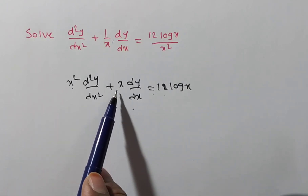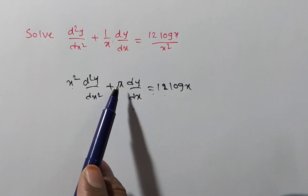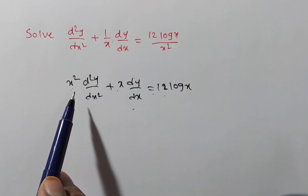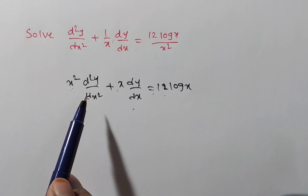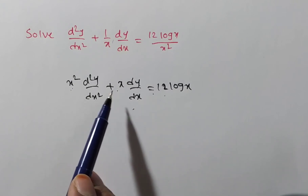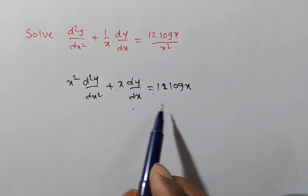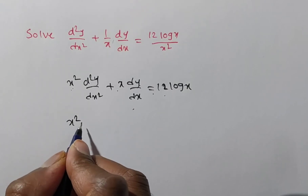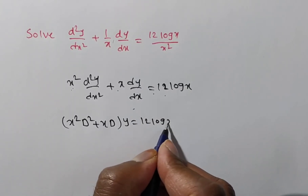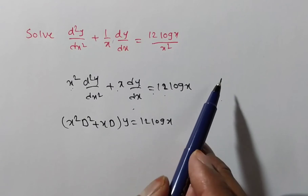Observe this problem. The coefficient of x has dy/dx, where the order of the derivative is 1 and the index of x is 1. And x² has d²y/dx², where the order is 2 and the index is 2. So this problem belongs to the Euler-Cauchy homogeneous linear differential equation — a differential equation with variable coefficients. Whenever variable coefficients are present, we first convert into operator form.